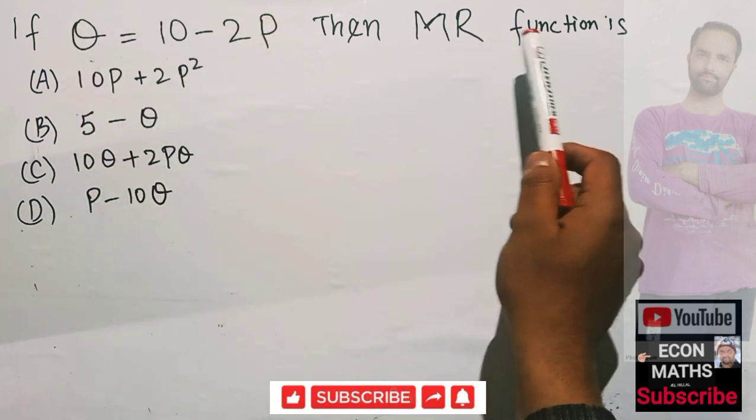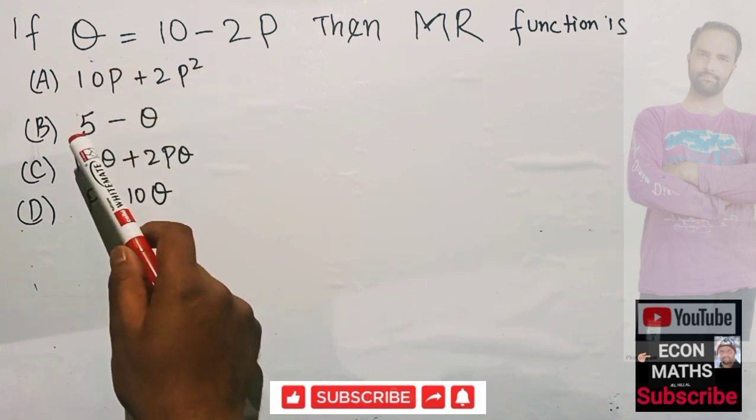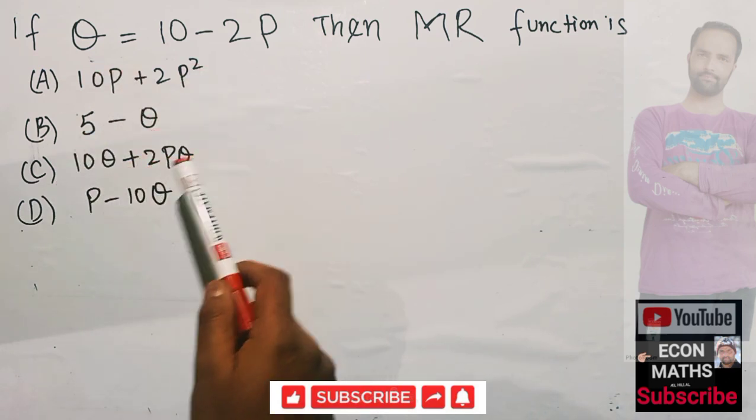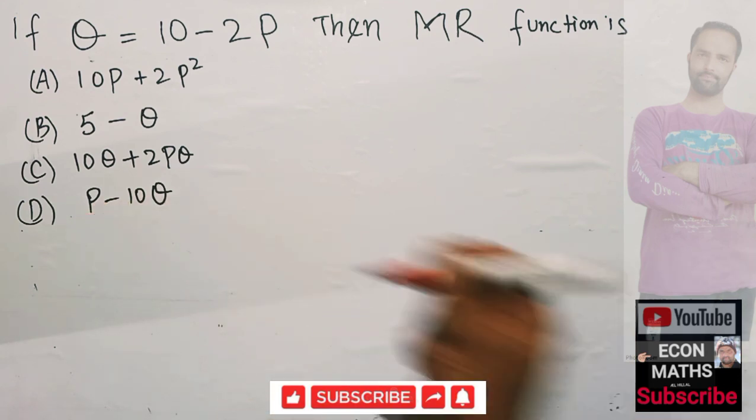Then marginal revenue function is - the options are given as: (A) 10P plus 2P square, (B) 5 minus θ, (C) 10θ plus 2Pθ, or (D) P minus 10θ. Let's try to find out. We are being